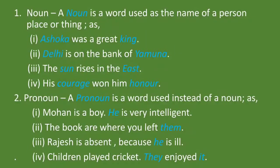दूसरा उदाहरण है: Delhi is on the bank of Yamuna. यहाँ Delhi और Yamuna दोनों ही noun हैं. तीसरा उदाहरण: The sun rises in the east. यहाँ sun और east दोनों noun हैं. चौथा उदाहरण: His courage won him honor. यहाँ courage और honor दोनों ही noun हैं.